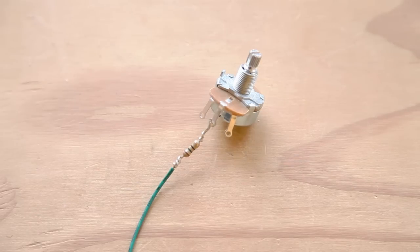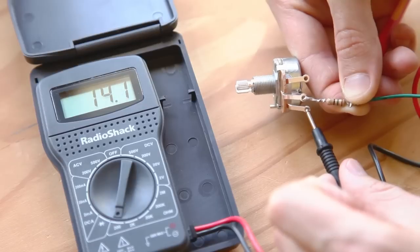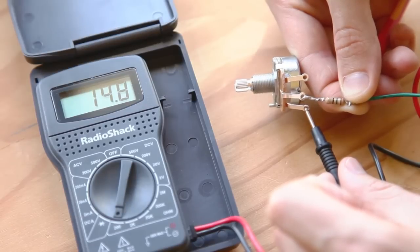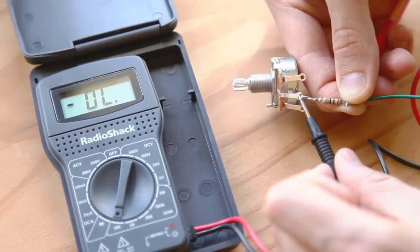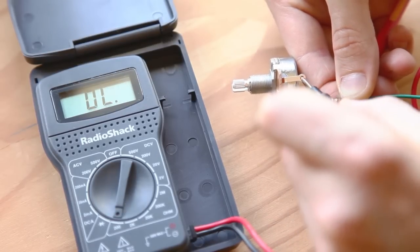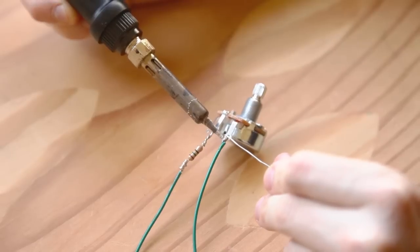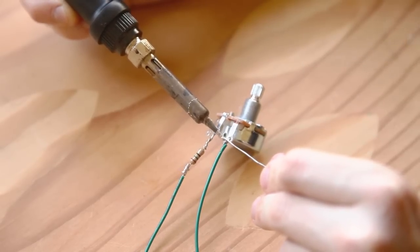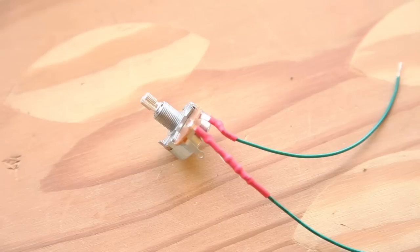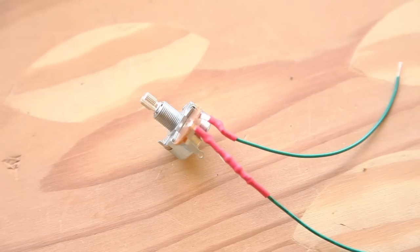Solder the resistor between the rheostat's center contact and a 3 inch length of wire. Use your multimeter to check the resistance between the center wire and the other two rheostat contacts. One of them should read about 15 ohms and the other about 40 ohms. Solder a 4 inch length of wire to the 40 ohm contact.